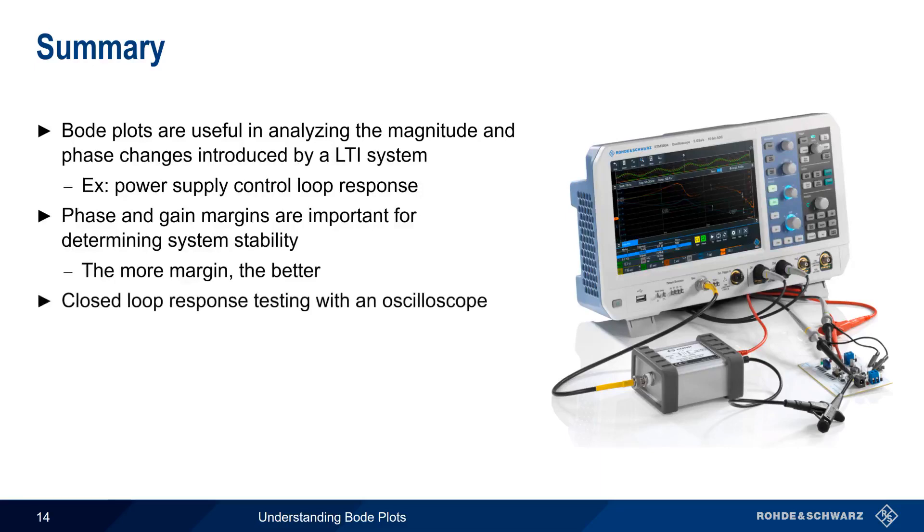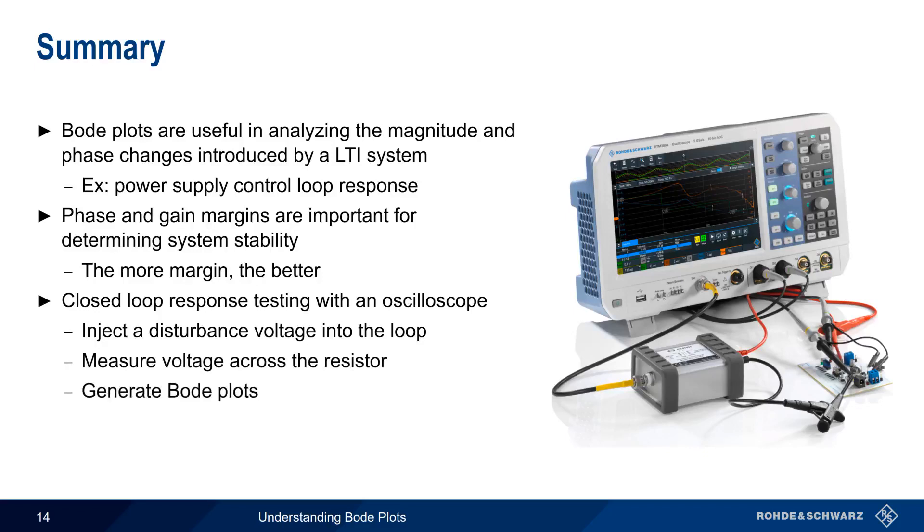In order to test closed loop response with an oscilloscope, we break the loop, insert a small resistor, and inject a disturbance voltage using an injection transformer. We then measure the voltage across the resistor, and the Bode plots of gain and phase are automatically generated and displayed on our oscilloscope.